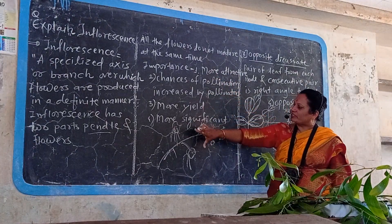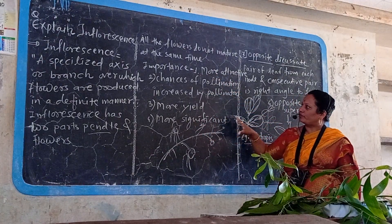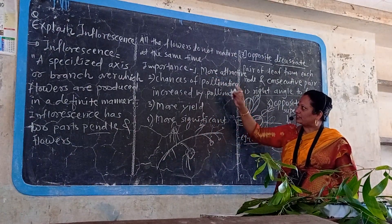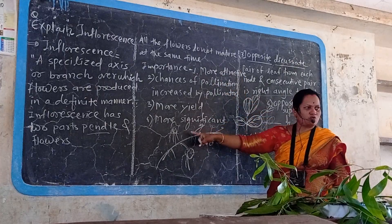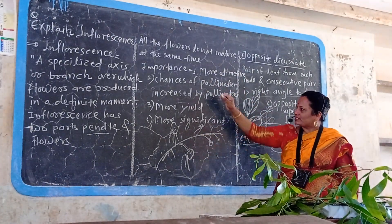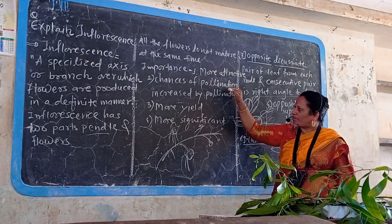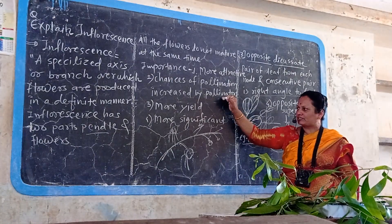What is the importance of a bunch of flowers, or group of flowers, or inflorescence? First importance: inflorescence is more attractive than single flowers to pollinator insects. Second: the chances of pollination are increased by pollinators.